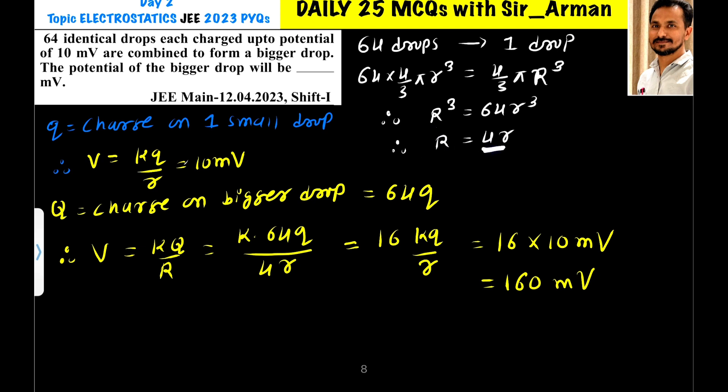Now let us assume q is the charge on one small drop. Each drop is charged to 10 millivolt, so the potential is given by the equation k q by r, which equals 10 millivolt.